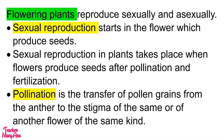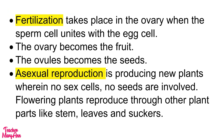Flowering plants reproduce sexually and asexually. Sexual reproduction starts in the flower. Sexual reproduction in plants takes place when flowers produce seeds after pollination and fertilization. Pollination is the transfer of pollen grains from the anther to the stigma of the same or of another flower of the same kind. Fertilization takes place in the ovary when the sperm cell unites with the egg cell. The ovary becomes the fruit; the ovules become the seeds. Asexual reproduction is producing new plants wherein no sexes and no seeds are involved — flowering plants reproduce through other plant parts like stems, leaves, and suckers.